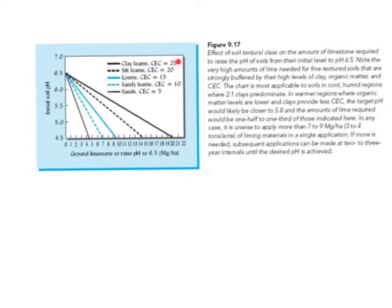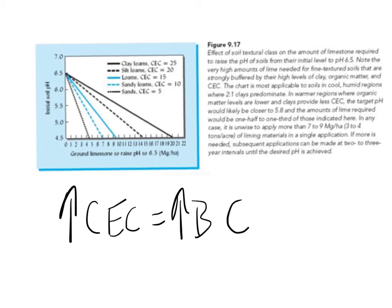So you can see, with the higher the CEC, the more long-term we have to think about fixing the pH problem there. And so this goes back to the idea that we discussed before, that the higher the CEC equals a higher buffering capacity, equals higher amounts of lime in that situation.